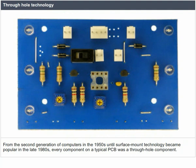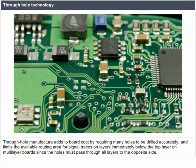Through-hole manufacture adds to board cost by requiring many holes to be drilled accurately, and limits the available routing area for signal traces on layers immediately below the top layer on multi-layer boards, since the holes must pass through all layers to the opposite side.